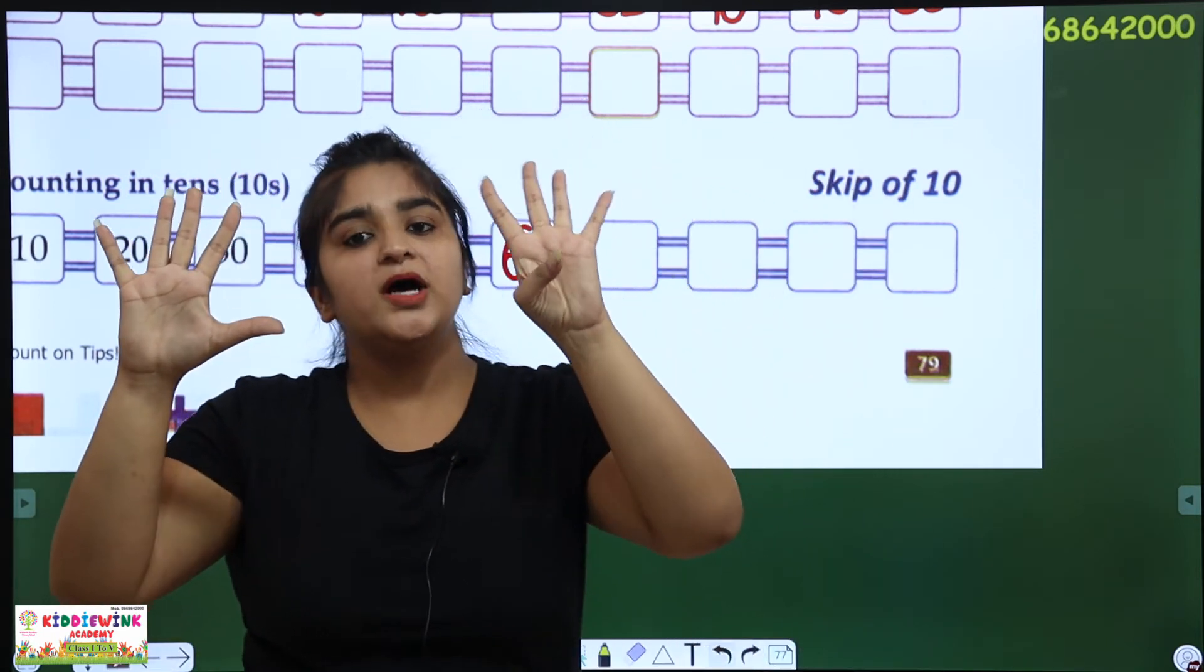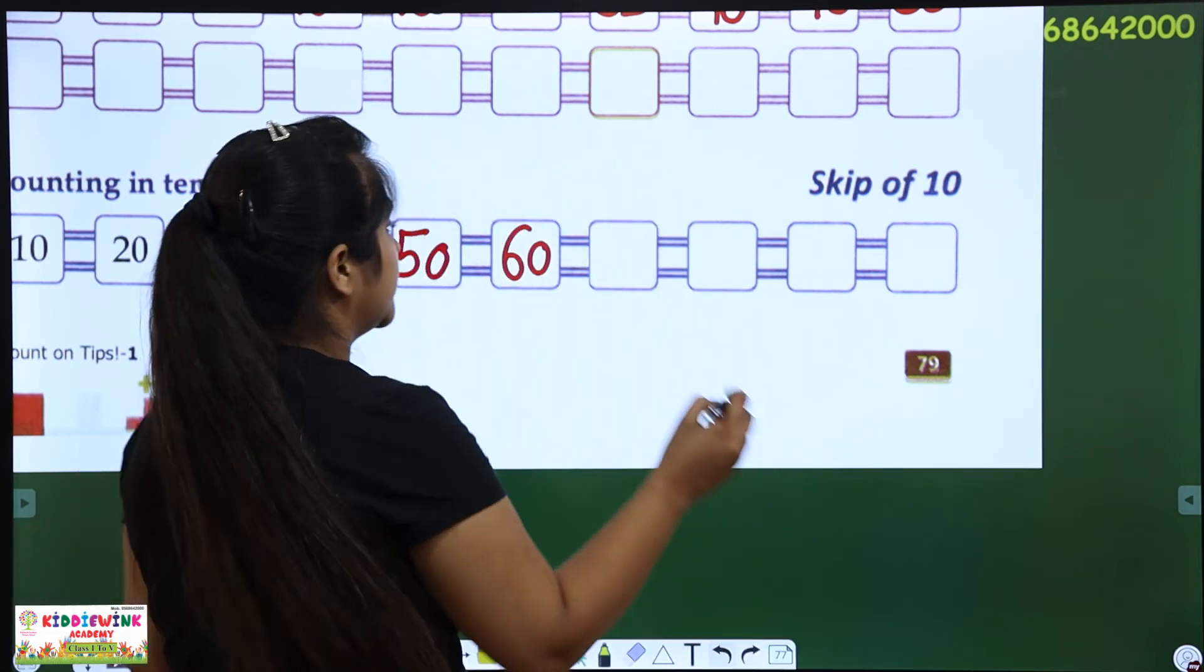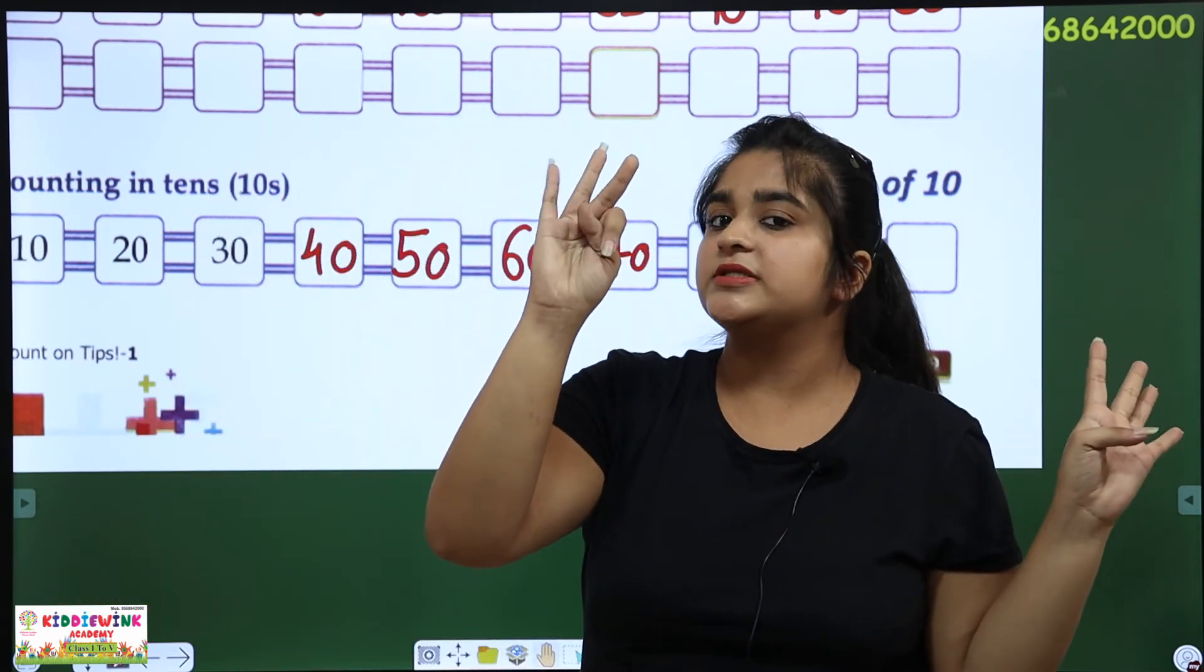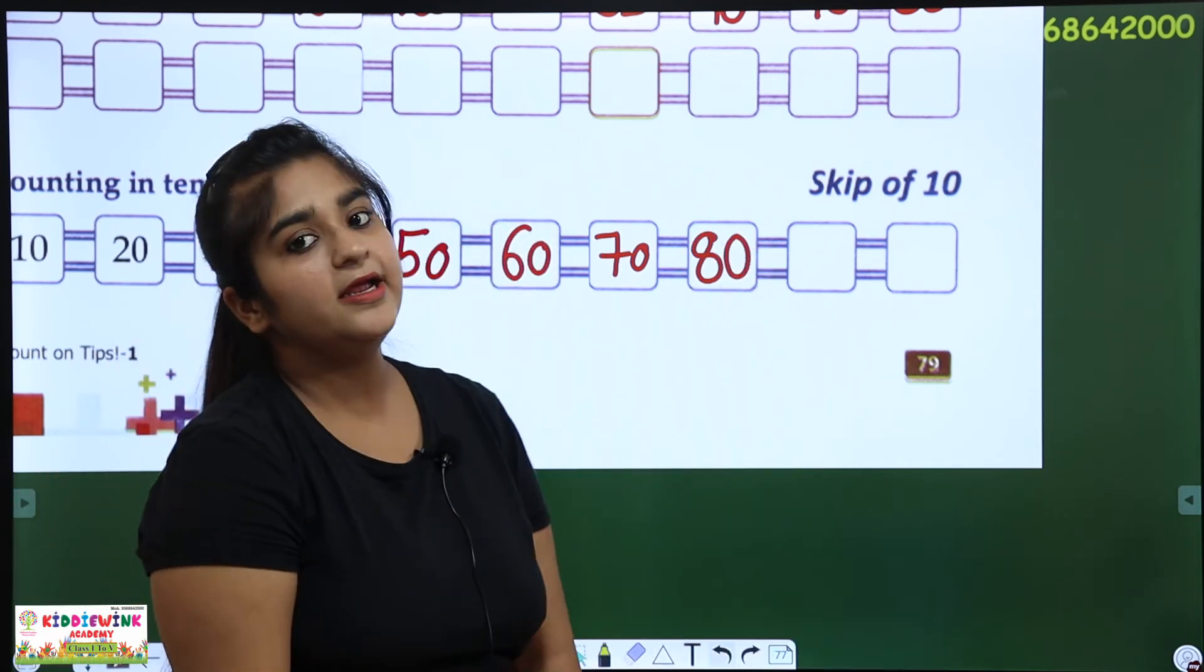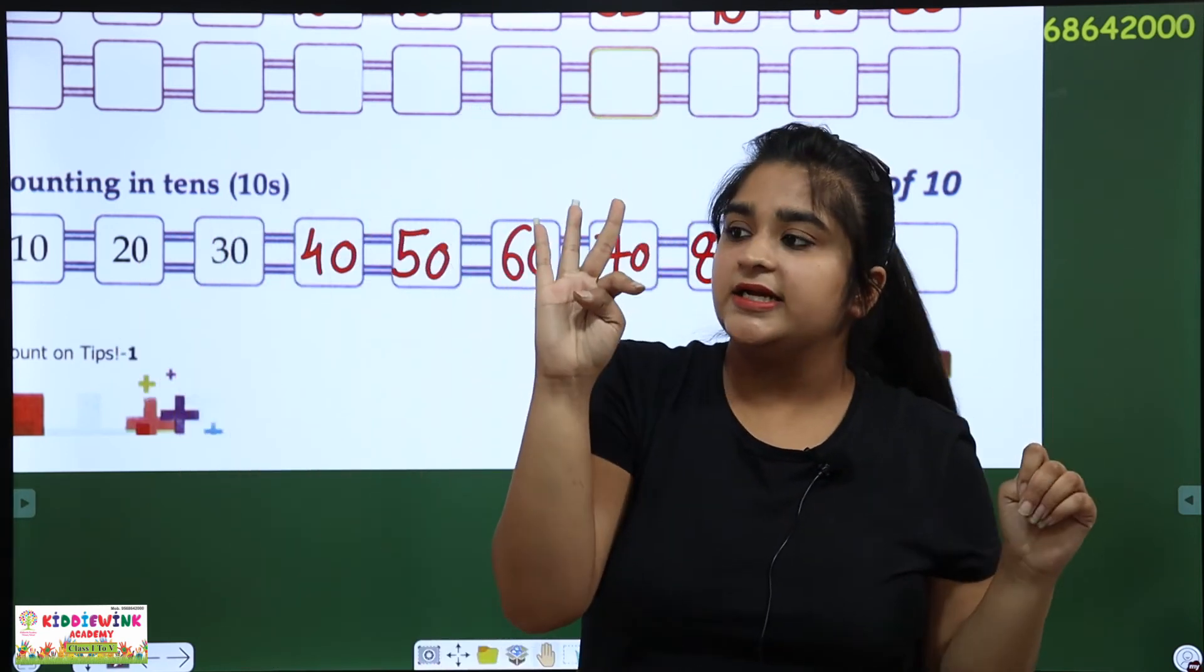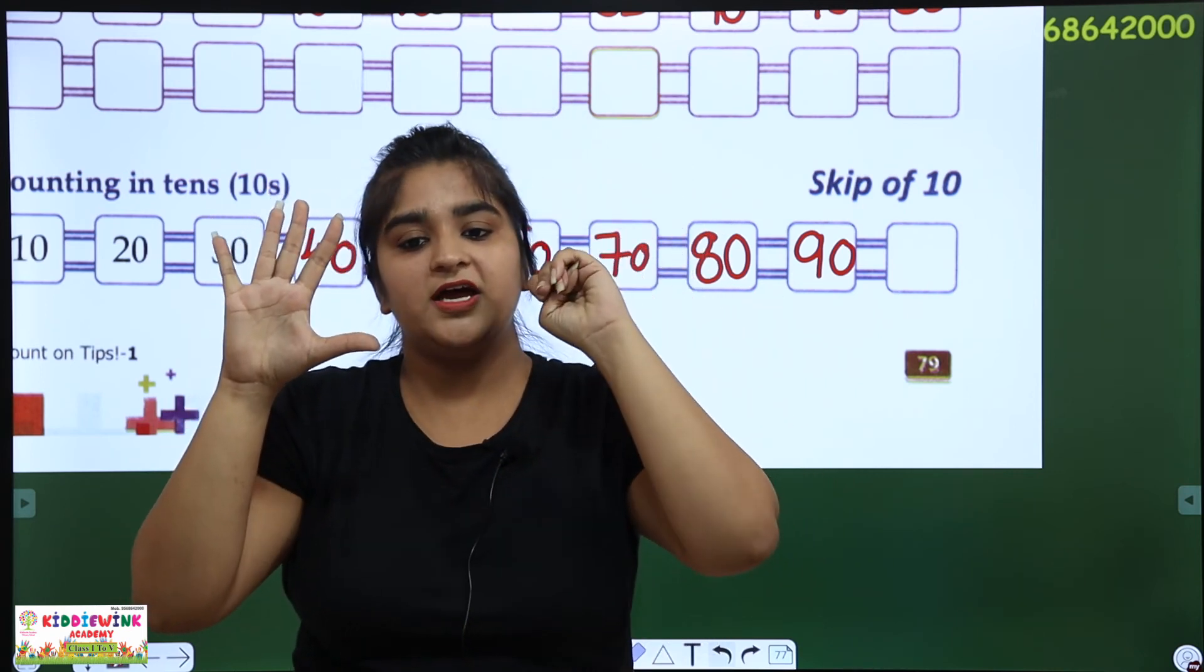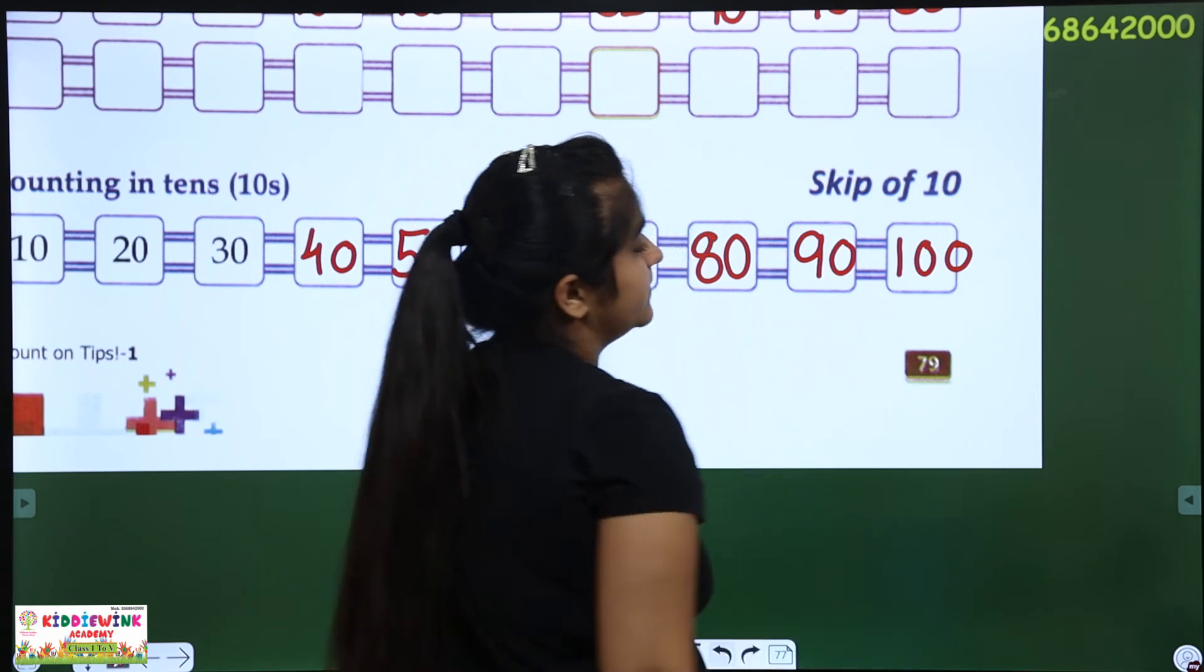60, 61, 62, 63, 64, 65, 66, 67, 68, 69, 70. Here, our answer is 70, 70. 70, 71, 72, 73, 74, 75, 76, 77, 78, 79, 80. Here, our answer is 80, 80. 80 plus 10. 80, 81, 82, 83, 84, 85, 86, 87, 88, 89, 90. Here, our answer is 90. 90, and after 90, 91, 92, 93, 94, 95, 96, 97, 98, 99, 100. Here, what will happen? 100, 100.